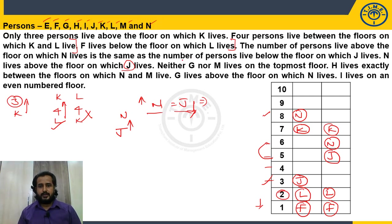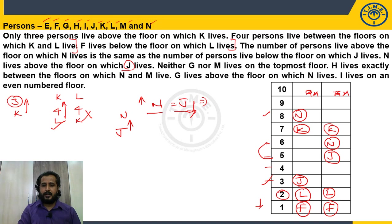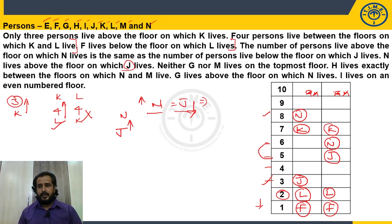Next clue: neither G nor M lives on the topmost floor. The topmost floor in a 10-story building is the 10th floor. So neither G nor M can be placed on the 10th floor. We note this constraint and move to the next clue.